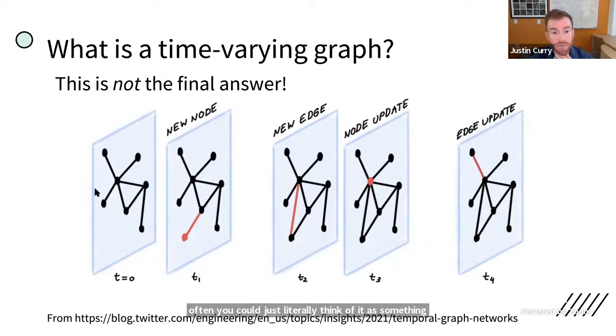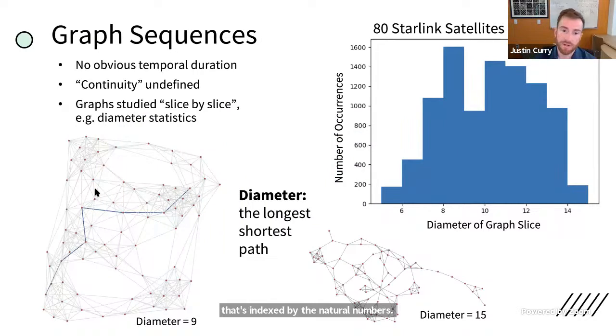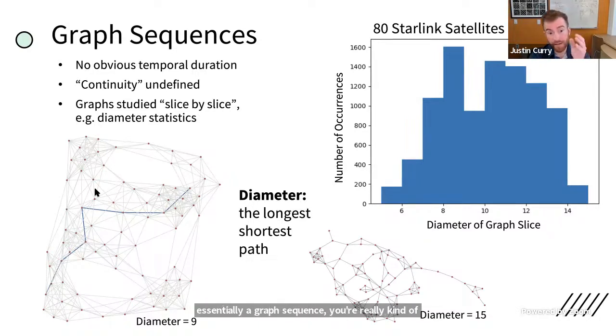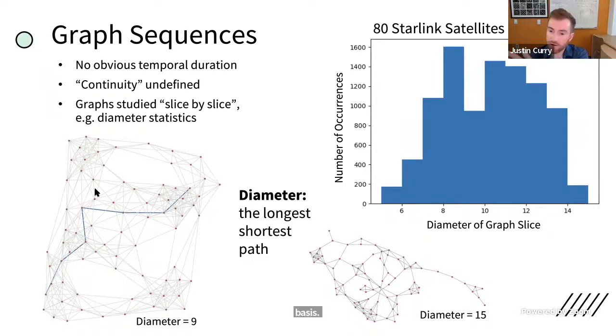Now, this perspective, I think, has some drawbacks. And one of them is that by thinking of a time-varying graph as essentially a graph sequence, you're really kind of reduced to studying graphs on a sort of slice by slice basis. And these ideas of when does an edge or how long does an edge endure across a connection is kind of obscured from here. I mean, it's not always immediately apparent how to relate features across time. Moreover, these kinds of slice by slice statistics are a little limiting. So for example, you might ask, well, what's the worst case scenario for communicating between two nodes in a time-varying graph?